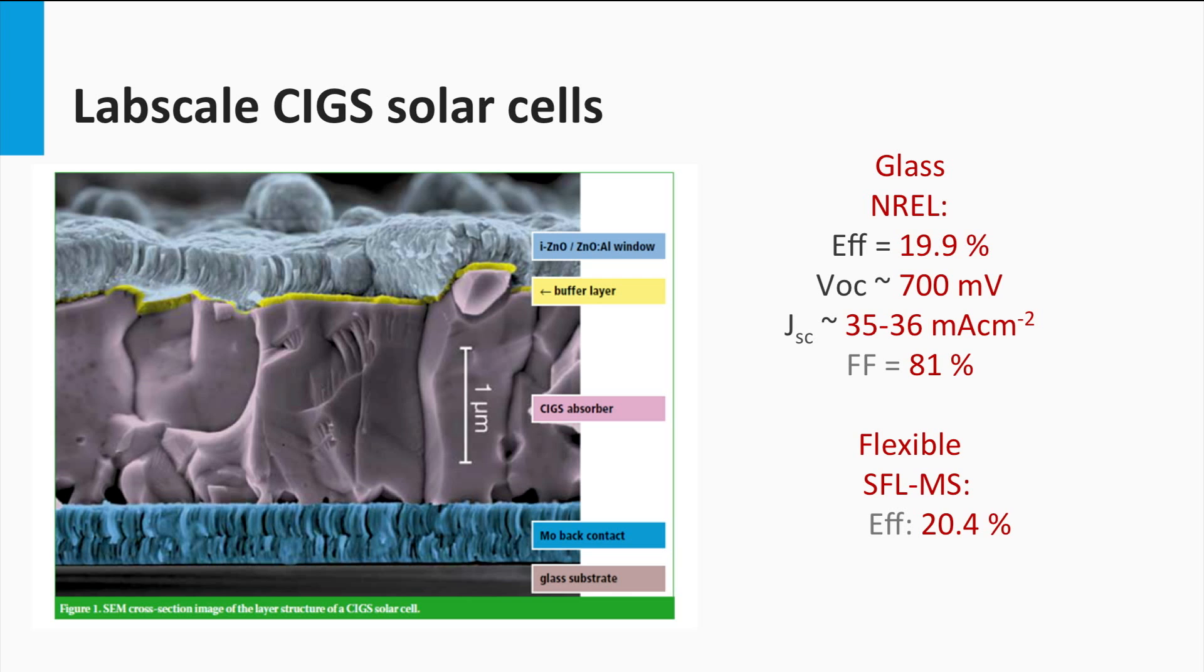The world record on flexible substrate has been obtained at the Swiss Federal Laboratories of Materials Science and Technology. The CIGS cell on a flexible polymer foil resulted in an impressive conversion efficiency of 20.4%.